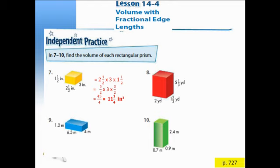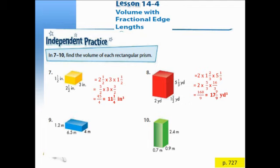For question 8, using the same formula, the length is 2, the width is 1 and 2/3 (which is 5/3), and the height is 5 and 1/3 (which is 16/3). Multiply 2 times 5 times 16 to get 160. Multiply the denominators 3 times 3 to get 9. So 160 divided by 9 gives 17 and 7/9 cubic yards.